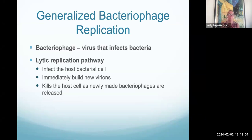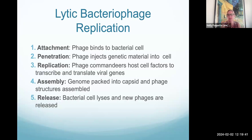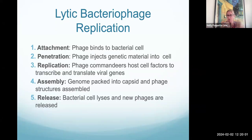The bacteriophage are viruses that infect bacteria. The lytic replication pathway is the shorter pathway: we get infection of the host bacterial cell, it immediately builds new virions, and as these bacteriophages are released, it kills the host cell. The steps are: attachment, where the bacteriophage binds to the bacterial cell; penetration, where the phage injects its genetic material into the cell; replication, where the bacteriophage hijacks the host cell, transcribes and translates viral genes, and copies its genome; assembly, where genomes are packaged into new capsids and the phage structures self-assemble; and finally release, where the bacterial cell bursts open and all the new bacteriophages are released to infect other bacterial cells.